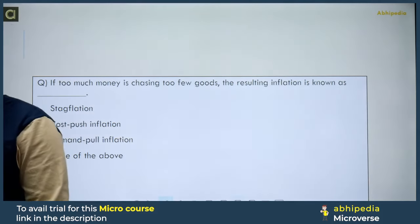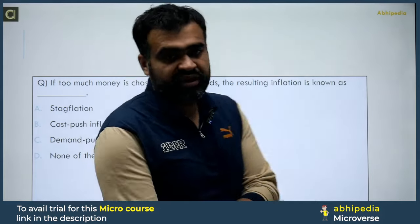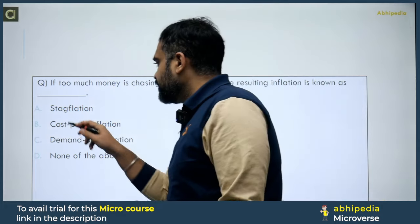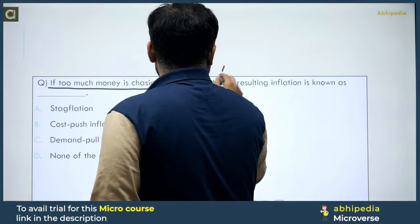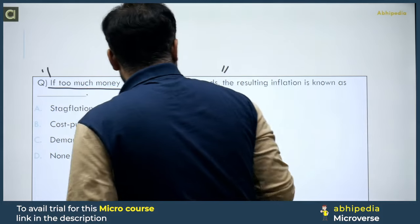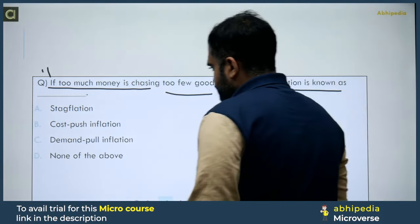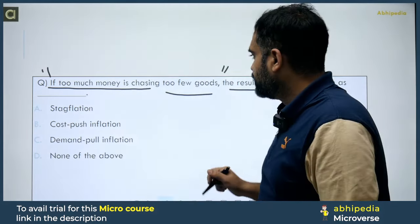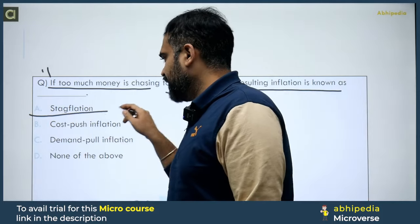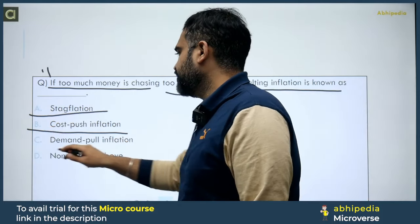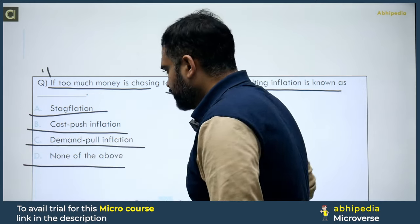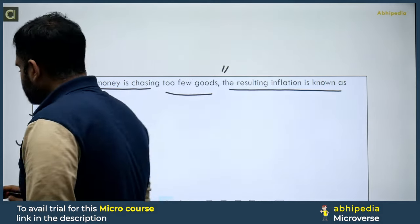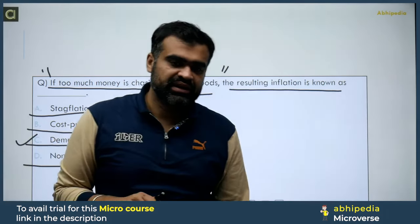This is an important question — please take note of it. If too much money is chasing too few goods, the resulting inflation is — options are: stagflation, cost push inflation, demand pull inflation, and none of the above. The correct answer for this is option C — demand pull inflation.